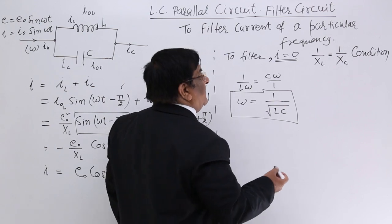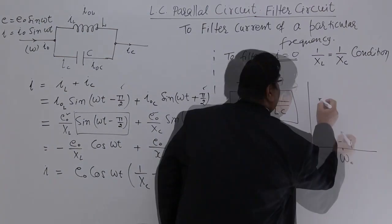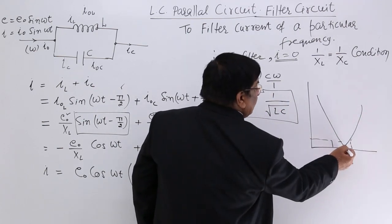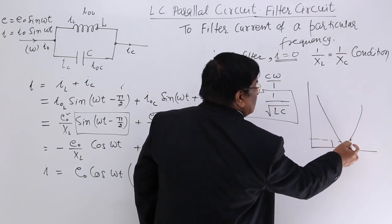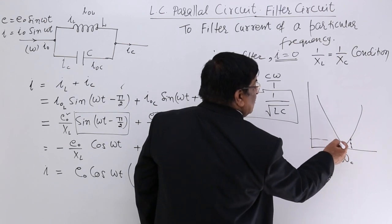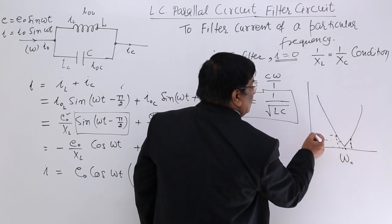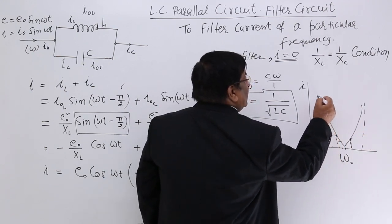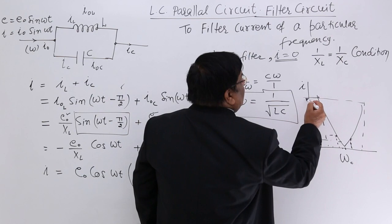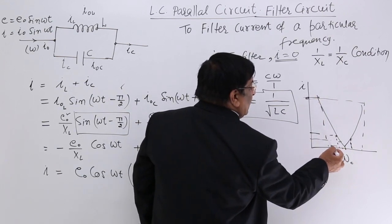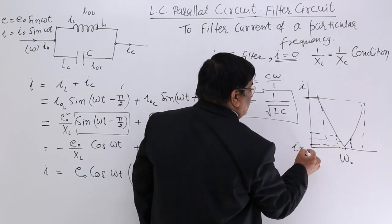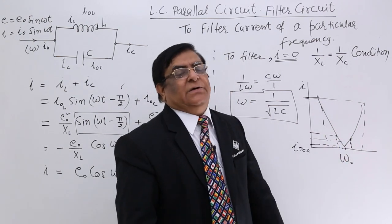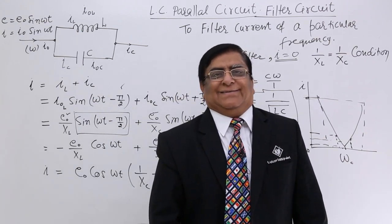Now if we get the frequency response and we make a graph like this. This particular frequency ω₀, other frequencies will have certain value, they will have certain value I. This frequency, of course all these frequencies will have I. But this frequency, particular frequency, for this I is almost equal to zero. So this is filtered out. This is all about filter circuit. Thank you.